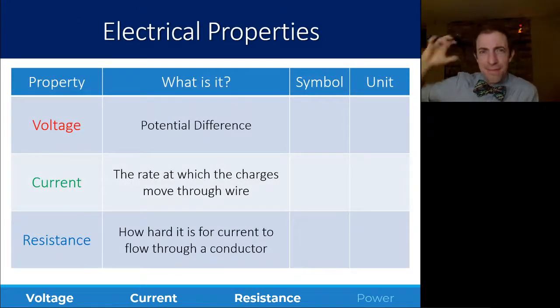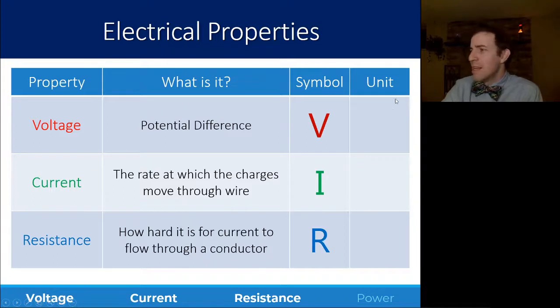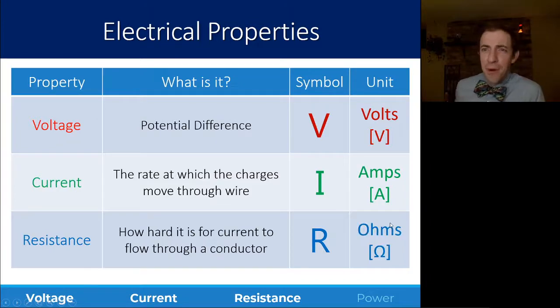So, in summary, these three properties, before we talk about their mathematical relationship, you should know pretty handedly. You should know that the voltage, being potential difference, has a symbol of V. Current is a symbol of I. That's the rate that charges flow. Resistance, how hard it is for the charges to flow, is R. Now, units will use volts, amps, and ohms.